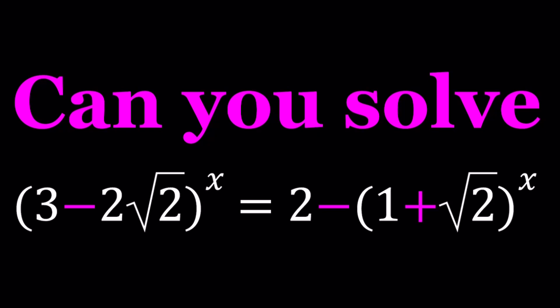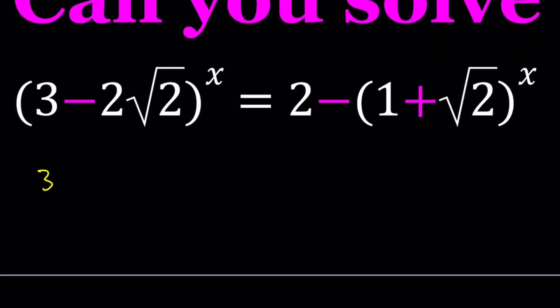We have (3-2√2)^x = 2-(1+√2)^x. Now, we're going to add (1+√2)^x to both sides. That's the original statement of the problem.